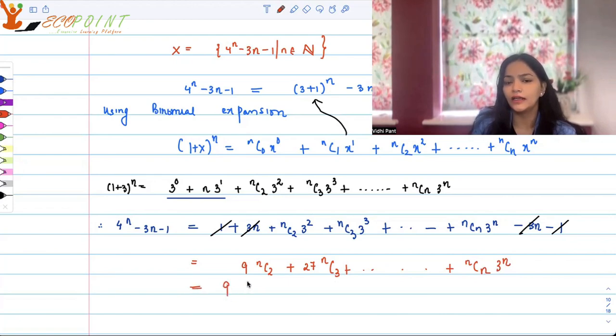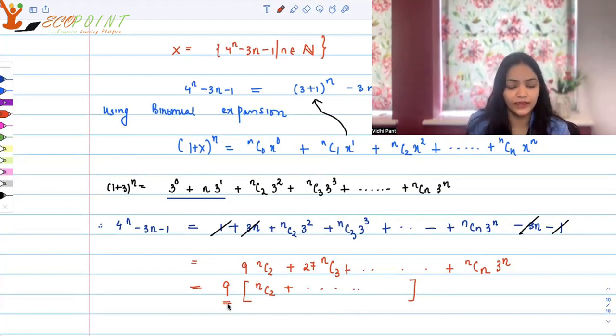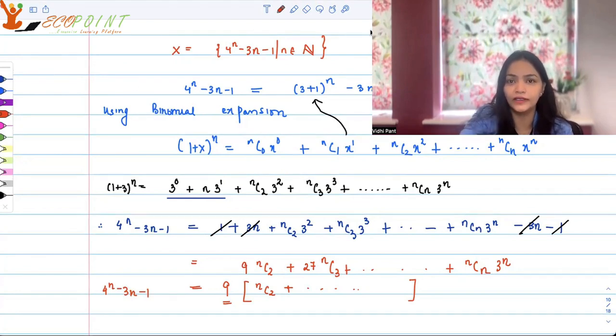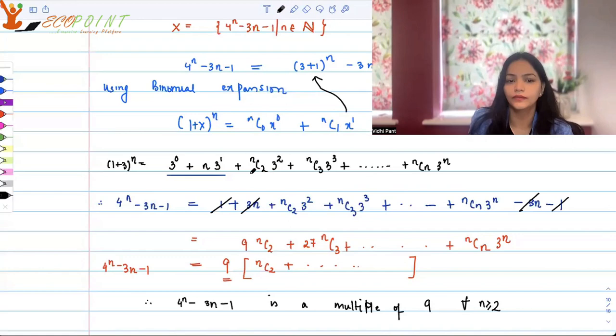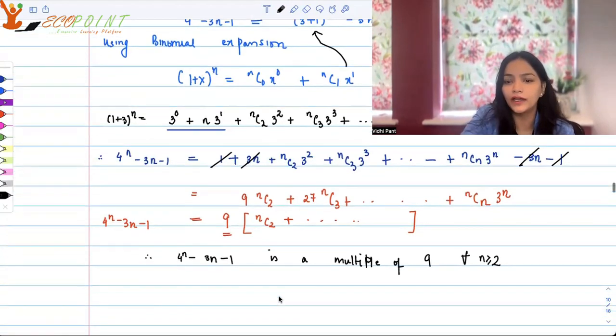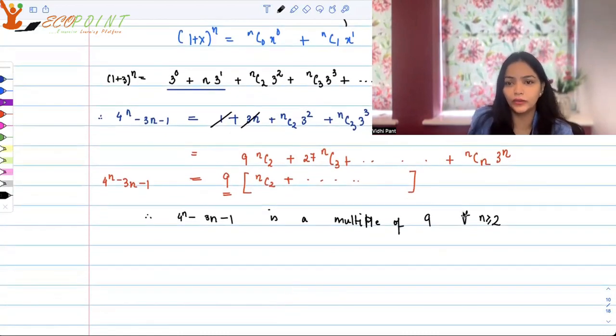In other words, clearly 9 comes out common, so whatever you have here is a multiple of 9. It's 9 times something, right? So whatever this is, 4^n - 3n - 1 will result in 9 times something. So 4^n - 3n - 1 is a multiple of 9 for all n greater than or equal to 2.